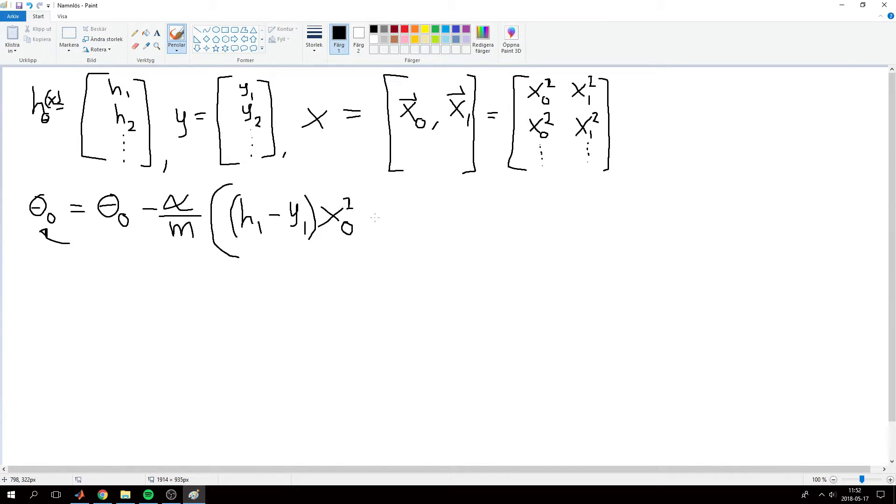And then we will have a sum of all those values. So we will continue to have plus h2 minus y2 times x feature 0 training example 2, and that will continue for all of our values for x feature 0. This will just be a number.